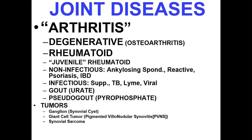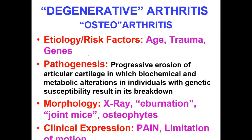First is osteoarthritis — degenerative arthritis. Etiology and risk factors: it is most common in old age patients. As age advances, after about 50 years, almost all people suffer from osteoarthritis. There may be some predisposing traumatic injury or some genetic predisposition. The pathogenesis of this degenerative joint disease involves progressive erosion of the articular cartilage, in which biomechanical and metabolic alterations in individuals with genetic susceptibility result in its breakdown.